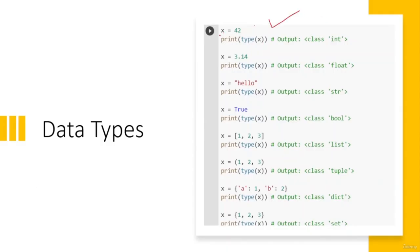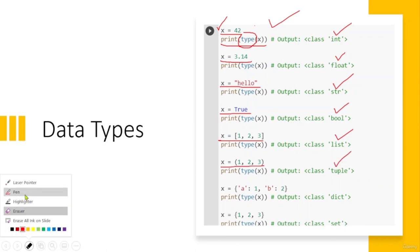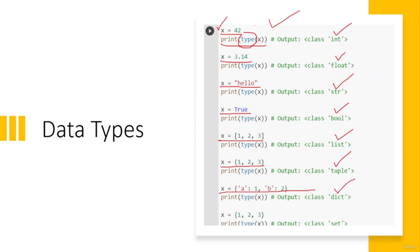Since Python is a dynamically typed language, you don't mention the data type when assigning a value — Python determines it automatically at runtime. You can output the data type of a variable using the type() function. For example: x = 42 → type(x) outputs 'int'; x = 3.14 → 'float'; x = 'hello' → 'str'; x = True → 'bool'; x = [1,2,3] → 'list'; x = (1,2) → 'tuple'; x = {'key': 'value'} → 'dict'; x = {1,2,3} → 'set'.